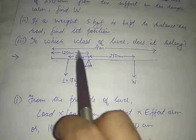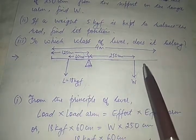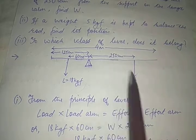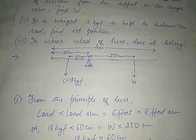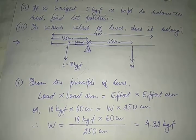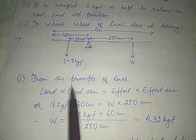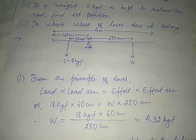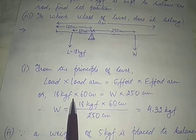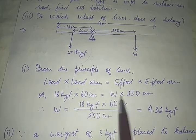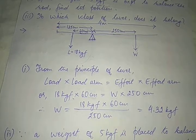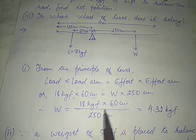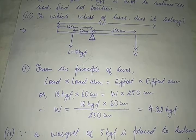A weight W is placed at a distance of 250 centimeters from the support on the longer arm. We know the load (18 kgf), the load arm (60 cm), and the effort arm (250 cm). Using the principle of lever: 18 kgf × 60 cm = W × 250 cm. W comes out to be 4.32 kgf.